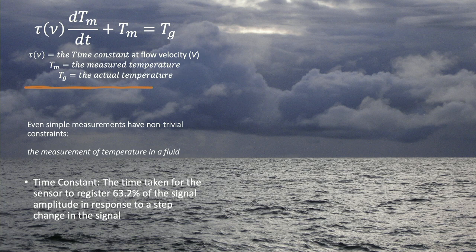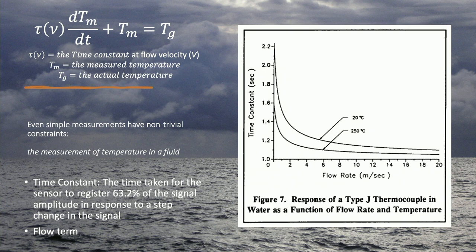The time constant is defined as 63% of the signal amplitude after a certain amount of time, and there's also a flow term involved. What the characteristic curve tells you is that if your fluid isn't moving past your sensor, its response time is much slower than if the fluid is moving past. You might say that's obvious — and it is — but it has implications when you use this measurement in conjunction with other measurements to derive a variable such as salinity, which is a standard measurement in oceanography used to get back to density.